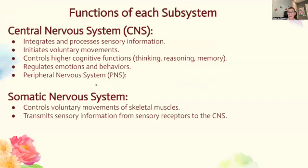Now we're going to look at the functions of each subsystem, because that's really what the CED question asks you to know. The central nervous system integrates and processes sensory information, initiates voluntary movements, controls higher cognitive functions like thinking, reasoning, and memory, and regulates emotions and behavior. The somatic nervous system controls voluntary movements of skeletal muscles and transmits sensory information from sensory receptors to the CNS. I also have the whole slideshow available at my TeacherPayTeachers store if you want to take notes — I'll put the link below.